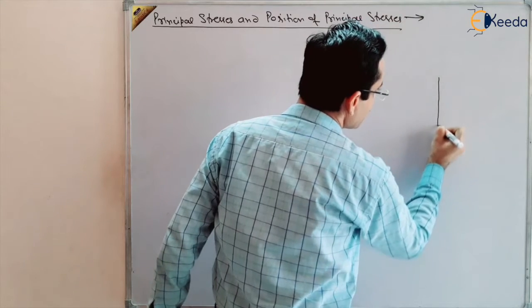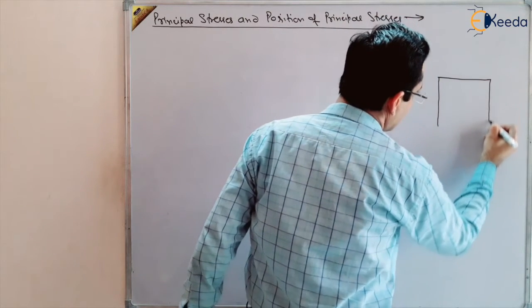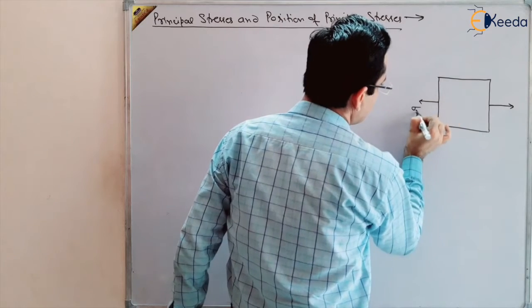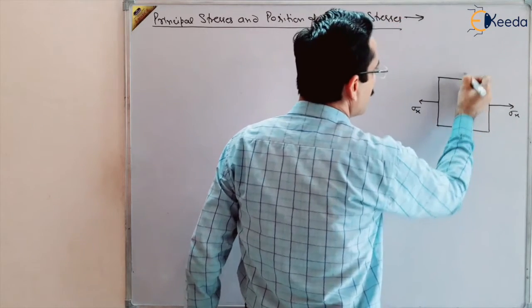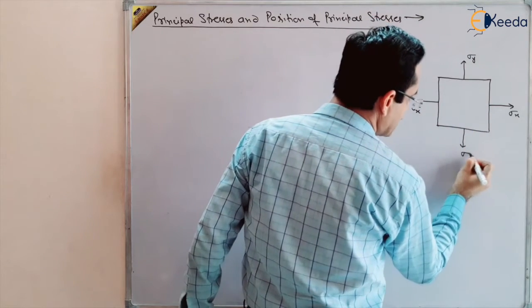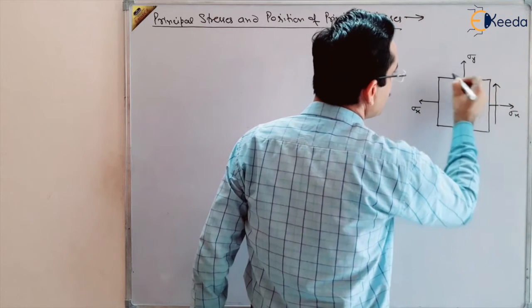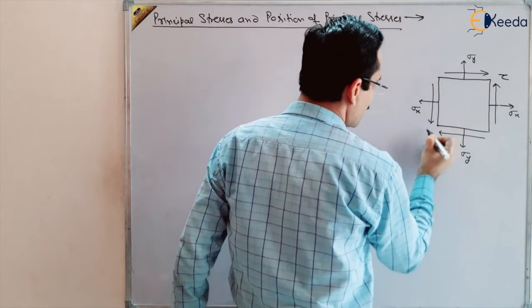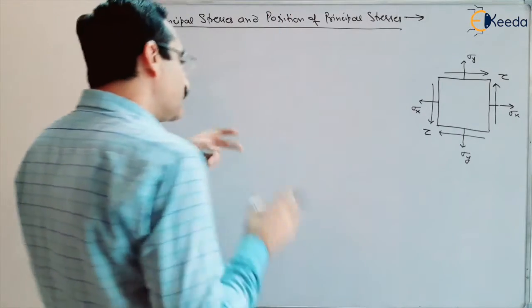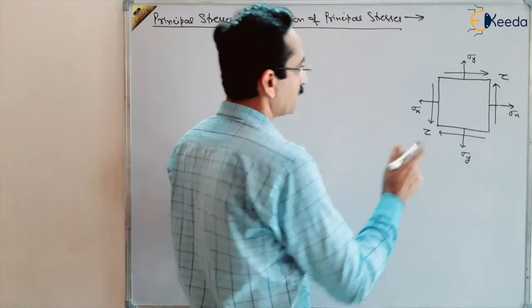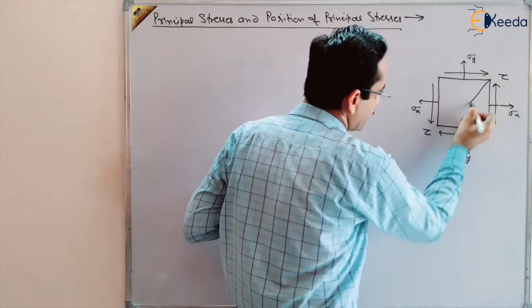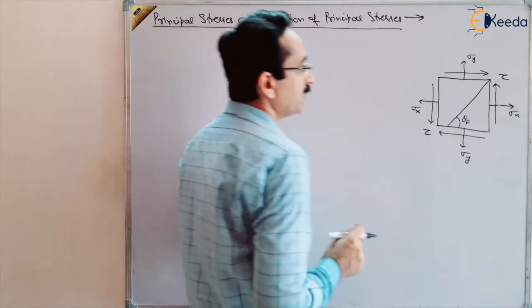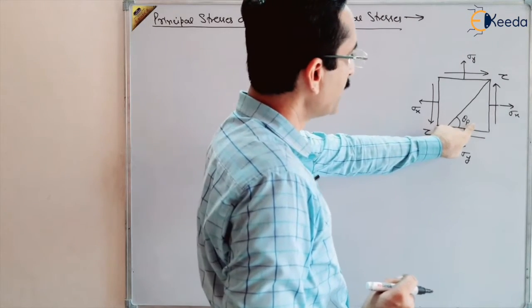We have a stress element. We are taking a generalized case, not separate different cases as we took previously. Now, we are taking the generalized case where we have applied sigma x — normal stresses — and sigma y, normal stresses at mutually perpendicular planes. We have also applied shear stresses. Due to this stress element, at what plane there will be maximum and minimum stresses acting — meaning principal stresses — will be acting. Suppose this is that plane at which the principal stress will be acting.